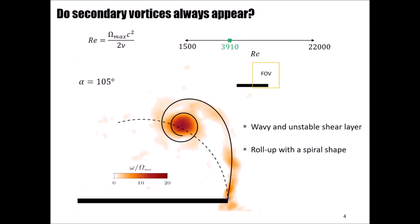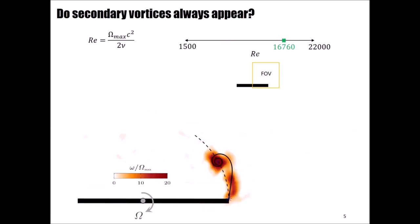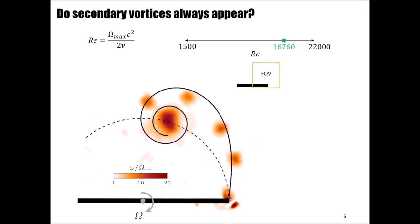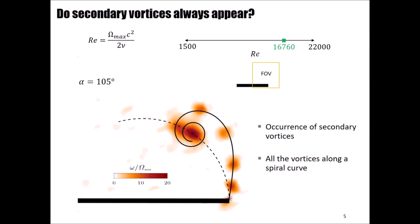Increasing again the Reynolds number will give you a totally different field of view, because now, instead of the shear layer, we have many secondary vortices. And if we refer again to the same angular position of 105 degrees, we can see that all of these secondary vortices are again placed along a spiral.